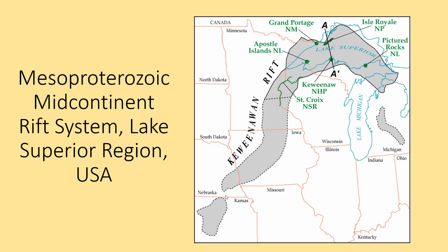This is a figure from your textbook highlighting some of the national parks found within the mid-continental rift system, which formed during the Mesoproterozoic eon. You can see Pictured Rocks National Landmark, Isle Royale National Park, which is an island, Grand Portage National Monument, Apostles Island National Landmark, and a couple of others as well.